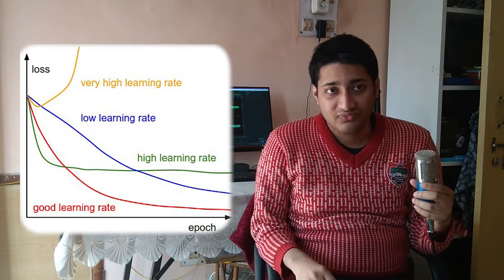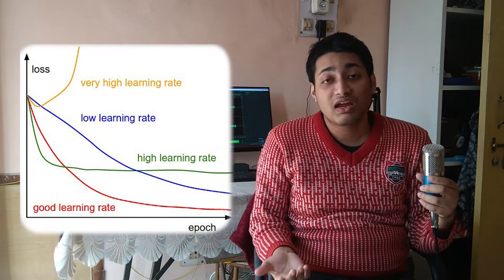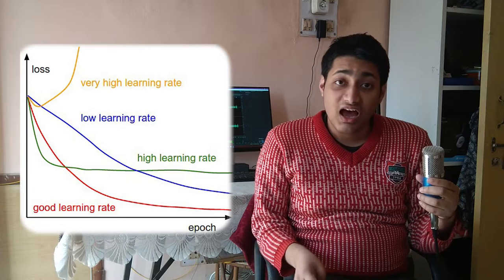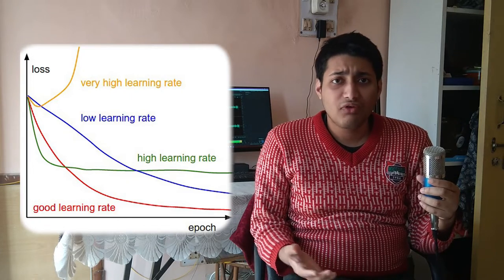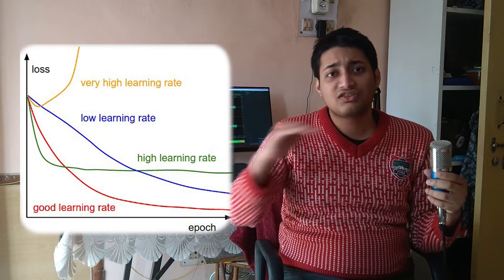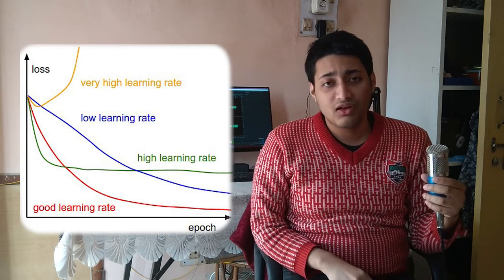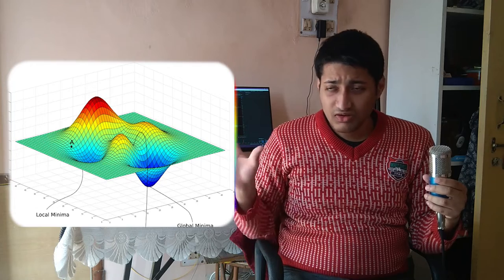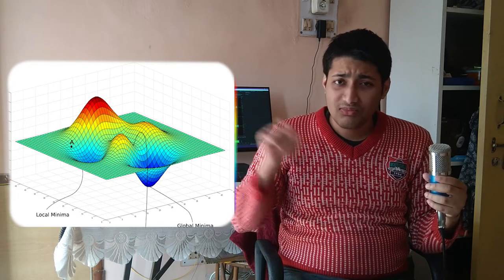And it takes more time to do the same thing. And if the learning rate is higher than usual, then what happens is that the error generally saturates at much higher value than expected. So here on the right hand side you can see this image where we can see that there is a local minima and there is a global minima.